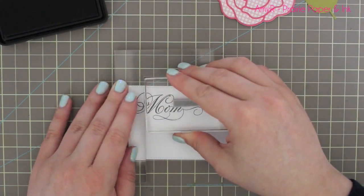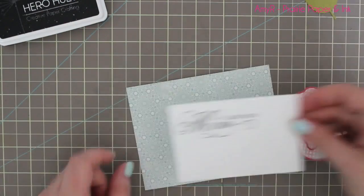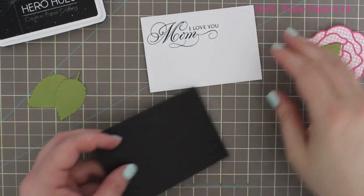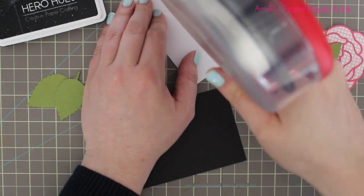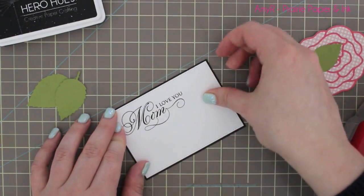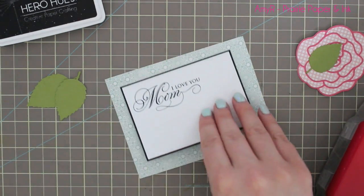I'm going to mat that onto a piece of black cardstock because I didn't like how everything was kind of pale and faded out there. I just trimmed a piece of black cardstock slightly larger than the white rectangle so that it gives it just a nice little border there and makes it pop a little bit more. Then I'm going to adhere that to this bluish patterned paper from the same pack.